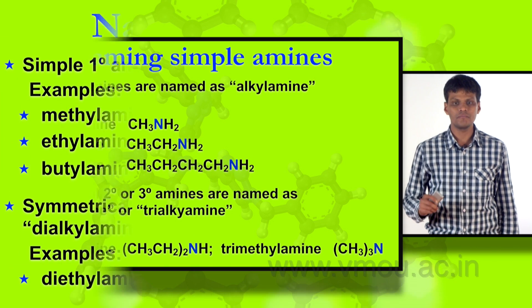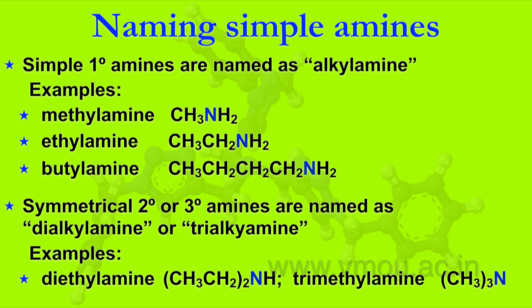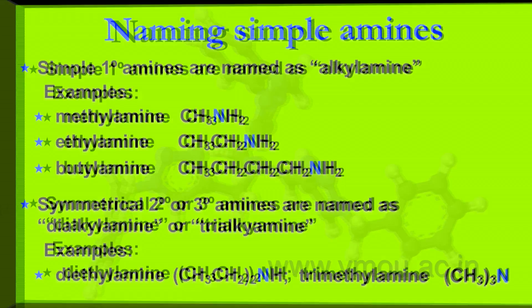Examples are diethyl amine, which is (CH3CH2)2NH, or trimethyl amine which is (CH3)3N. An increase in the number of alkyl groups represents its secondary or tertiary structure.